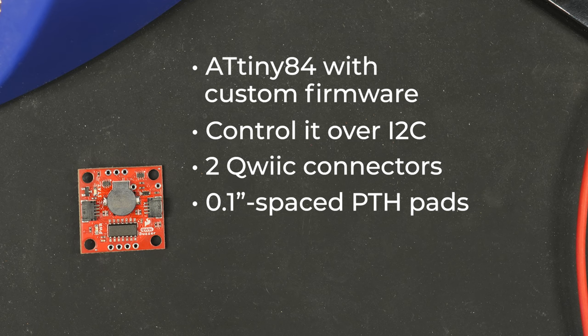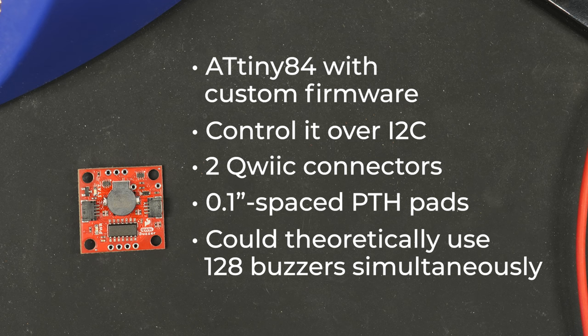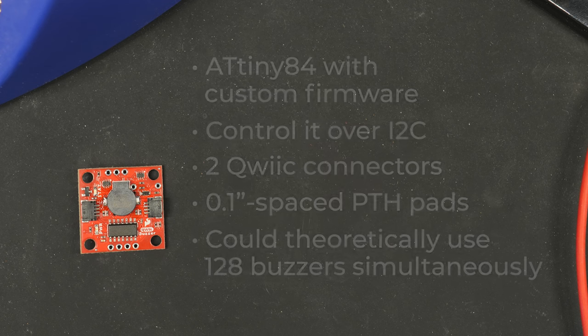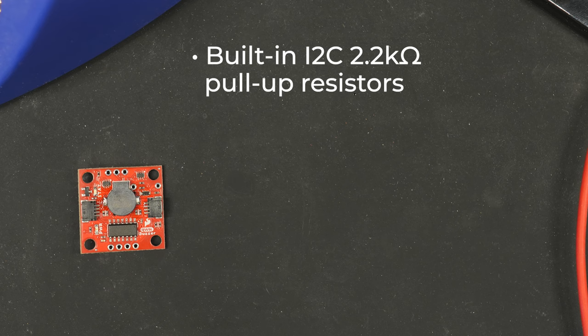And although the default address is 34, that can be changed to anything via software, and that's included as one of our example sketches, and that means that as long as you supply enough power, you could theoretically use 128 buzzers simultaneously. The board also has built-in I2C 2.2K pull-up resistors,